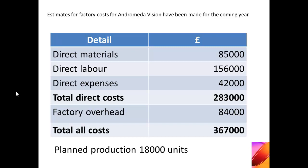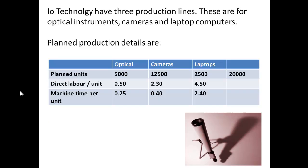For example, if you look at the various costs, this is for Andromeda Vision for the coming year. They project that they're going to use £85,000 in materials, £156,000 in direct labour, and their factory overhead is going to be £84,000. Their planned production units are 18,000, so if we divided £84,000 by 18,000, we would have an overhead cost per unit. That's okay for very simple situations, but it's not much use for the work that we've been doing. Where we have more than one production line, then we need to allocate and absorb on a different basis.